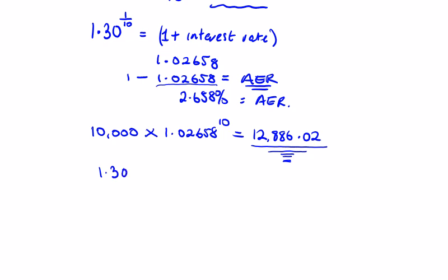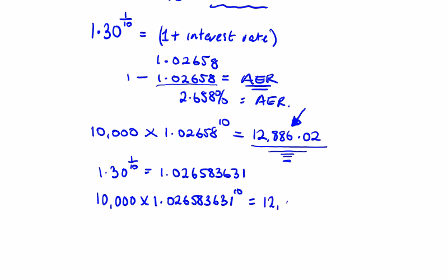So 1.30 to the power of 1 over 10 is 1.0... Now write down all the decimals that your calculator gives you: 1.026583631. So if we multiply €10,000 by 1.026583631 to the power of 10, your bank are not going to be giving you any more money than you deserve, so you shouldn't take any less money than you deserve. So you're going to use all these decimals in these questions. This is going to give €12,999.99. As you can see here, this is where your €13,000 comes from.